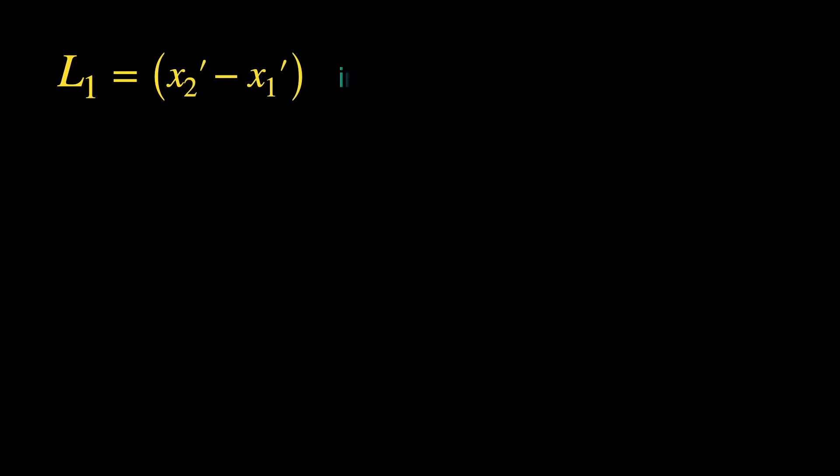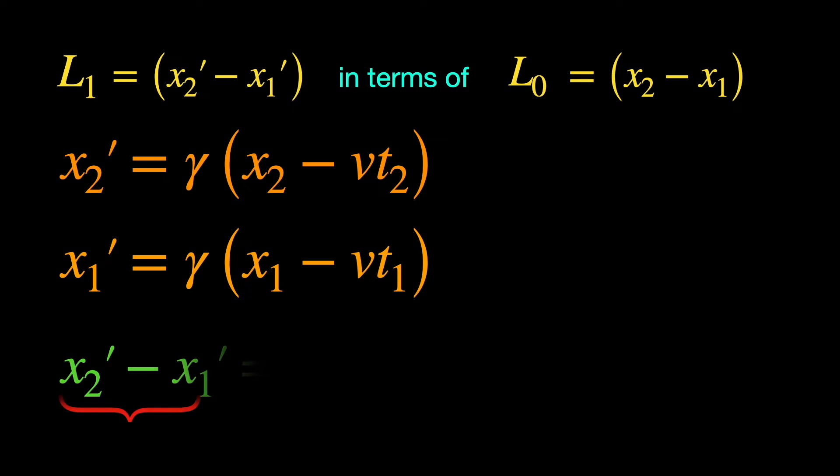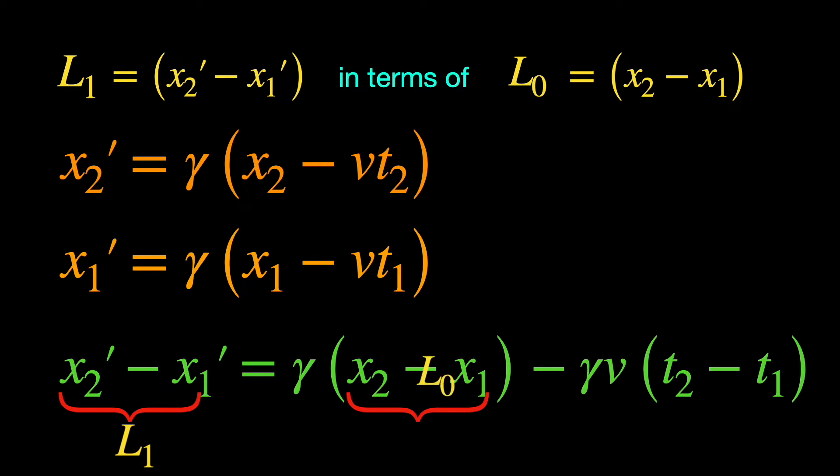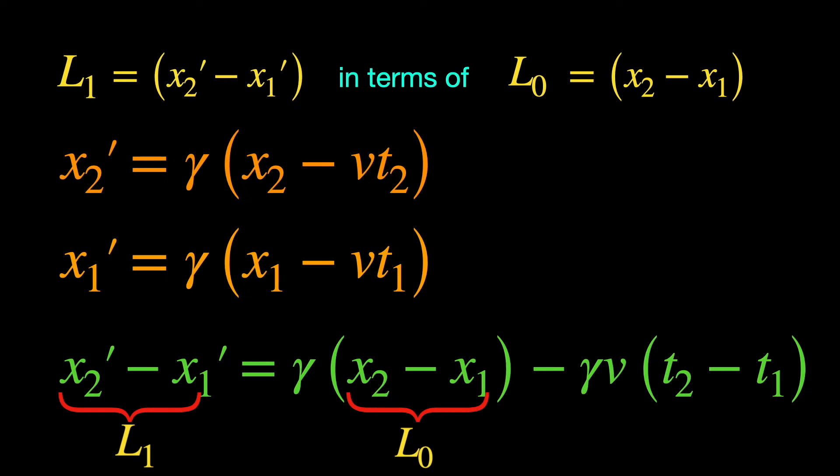Now, to relate the lengths measured in the two frames, we need to express L1, which is x2' minus x1', in terms of L0, which is x2 minus x1. Obviously, we should use the Lorentz transformation equations for x2' and x1' that will help us relate the difference L1 to x2 minus x1 equals L0. But Lorentz transformation equations also involve time coordinates. So what we get is L1 in terms of L0 and t2 minus t1. Now, an important thing about this t2 minus t1 that relativity texts do not emphasize enough, but we need to note, is the following.